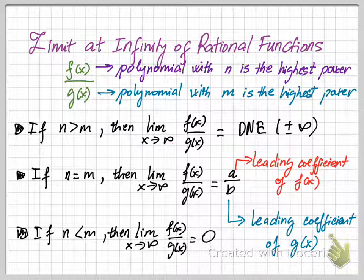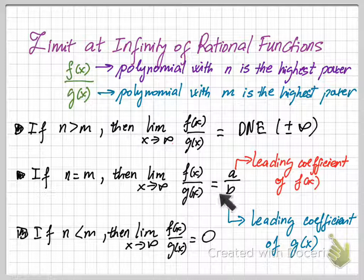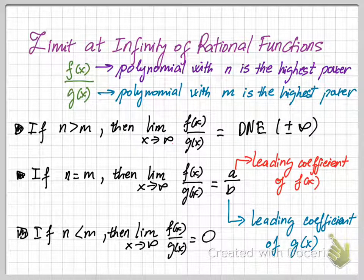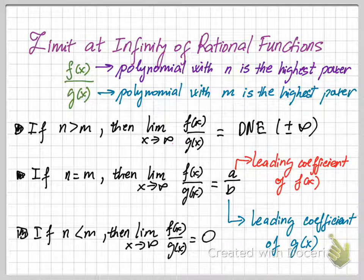If you remember from pre-calculus, we learned about rational functions. If n is less than m, then y equals zero is the horizontal asymptote of the rational function. When n equals m, then the constant line a divided by b is the horizontal asymptote. And when n is greater than m, this rational function will have an oblique asymptote, which causes the limit to go to positive infinity or negative infinity.